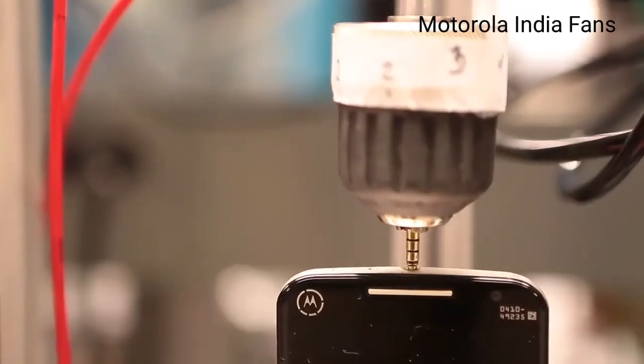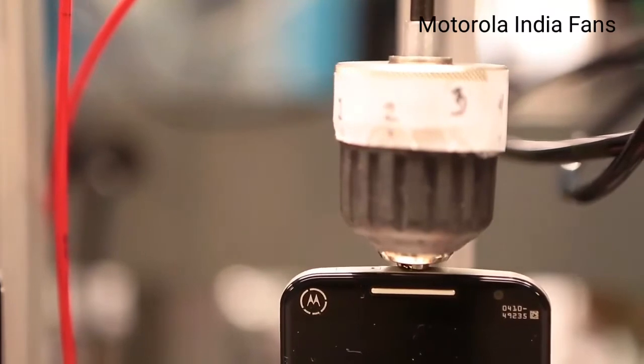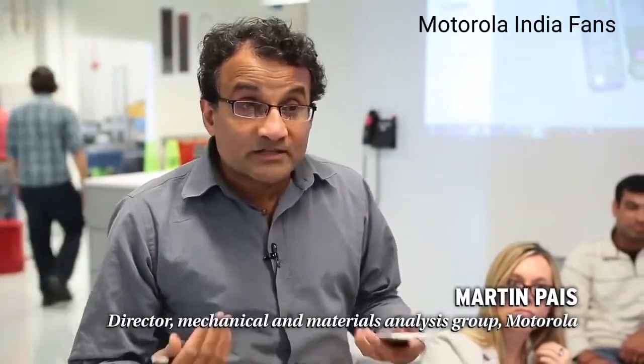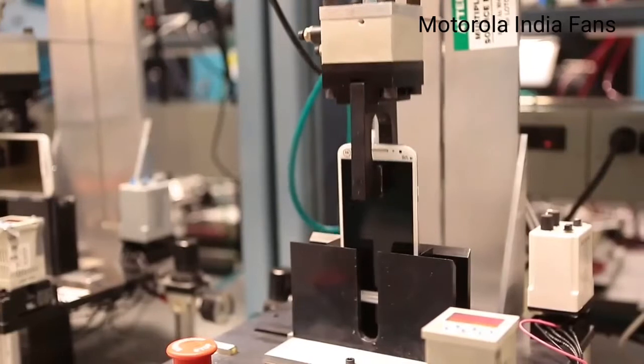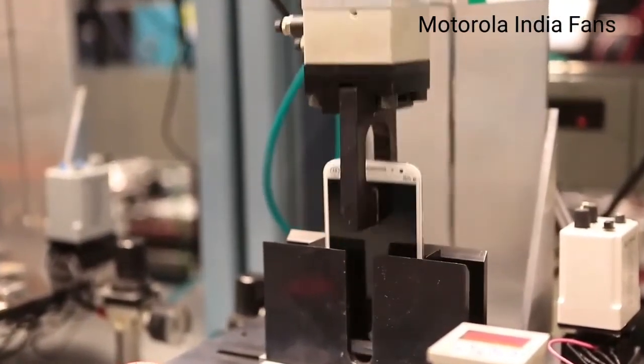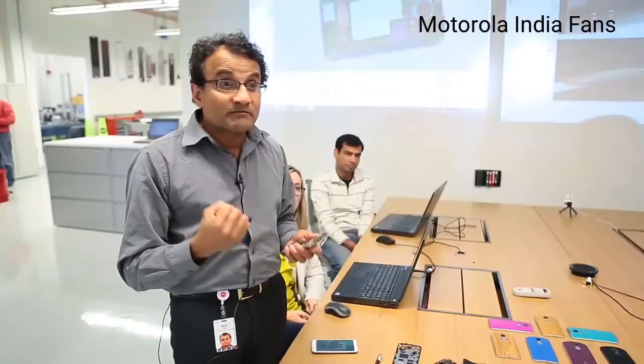So when you drop a phone on the floor, you are imposing a load on it and this force field actually travels through the phone and applies loads to the different components. The G level that I'm facing is 1 G. When you drop a phone, the G levels are 20,000 G because the G level is seen for an instant of time, less than a microsecond.